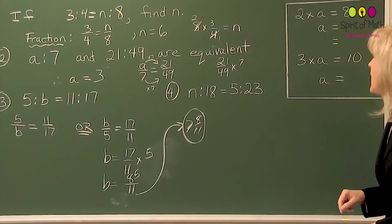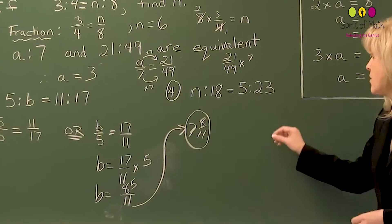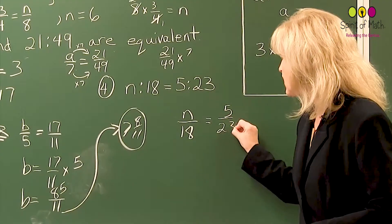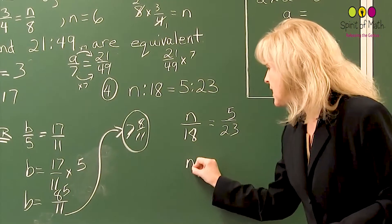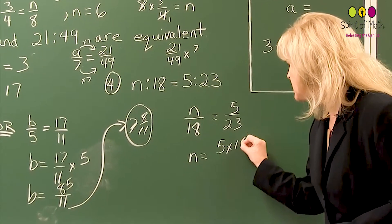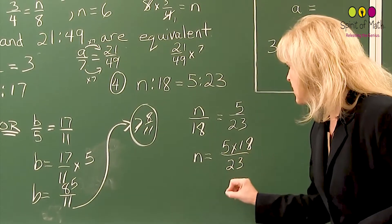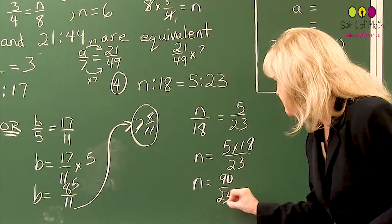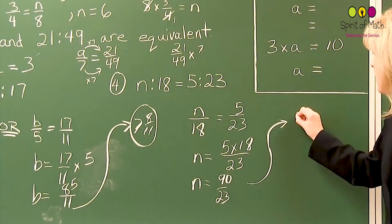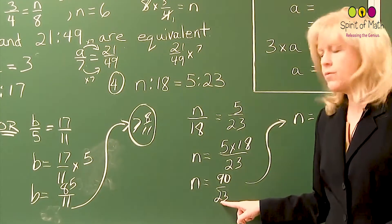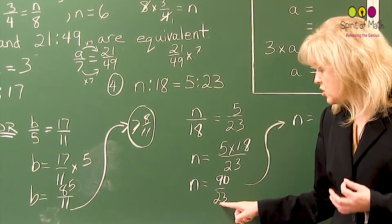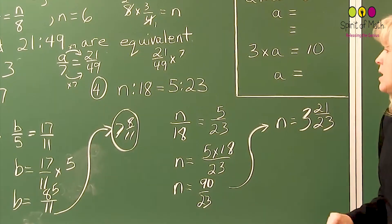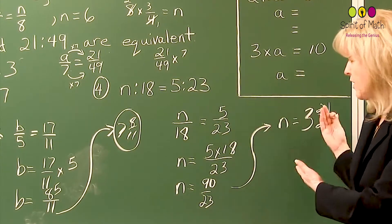In this case, you've got n to 18 is equal to 5 to 23. So you have n to 18 is equal to 5 over 23. And you can multiply that out. So you have n equals 5 times 18 over 23. And 5 times 18 is 90 over 23. So you want to make that into an improper fraction. 4 times 23 would be 92. That's 2 larger than the 90. So we know that's going to be 3 and 21 out of 23.